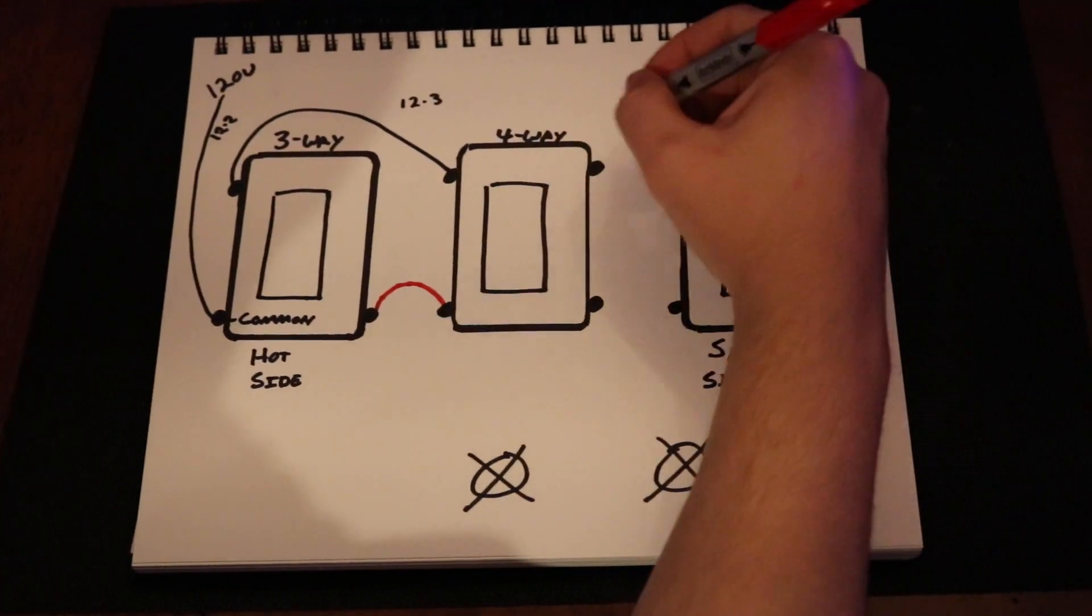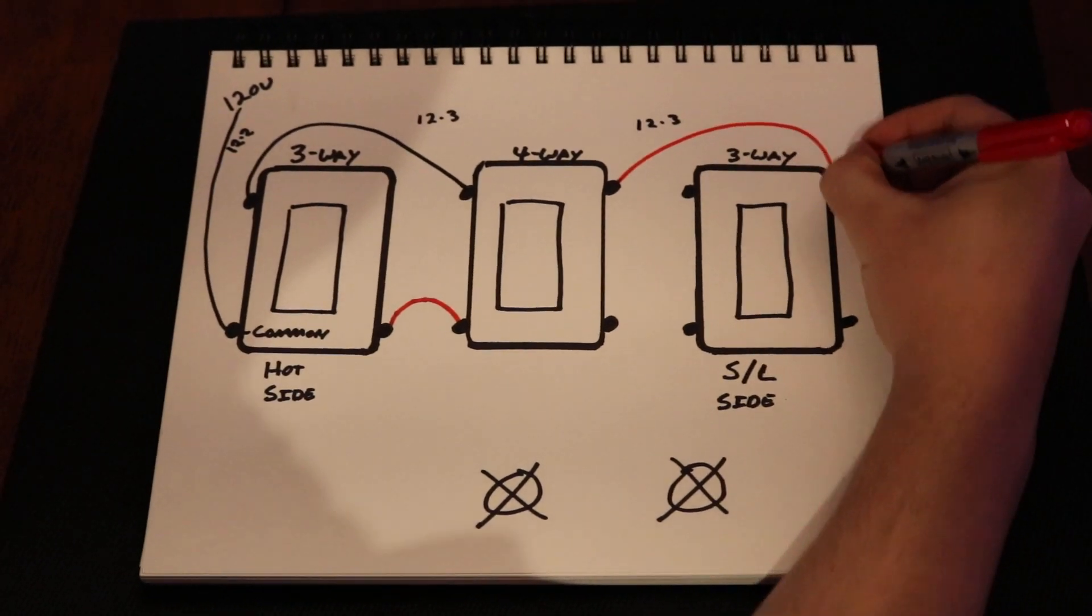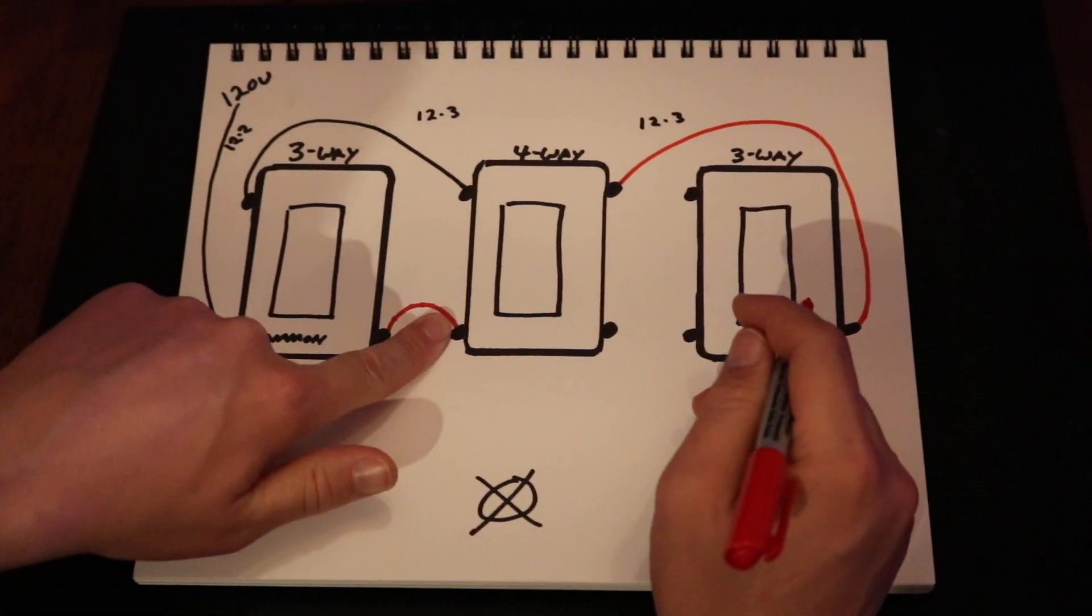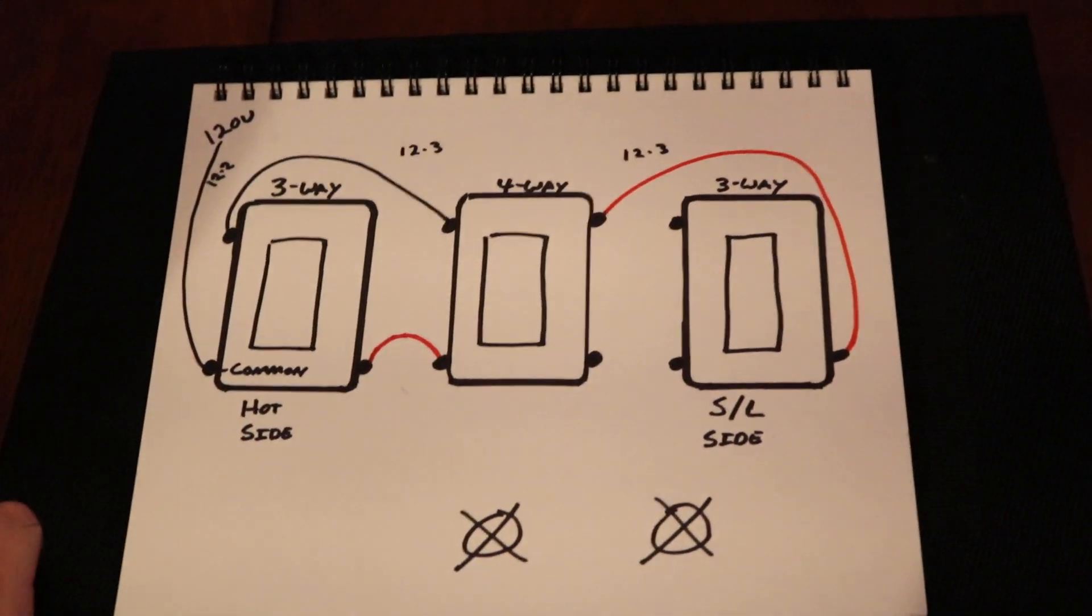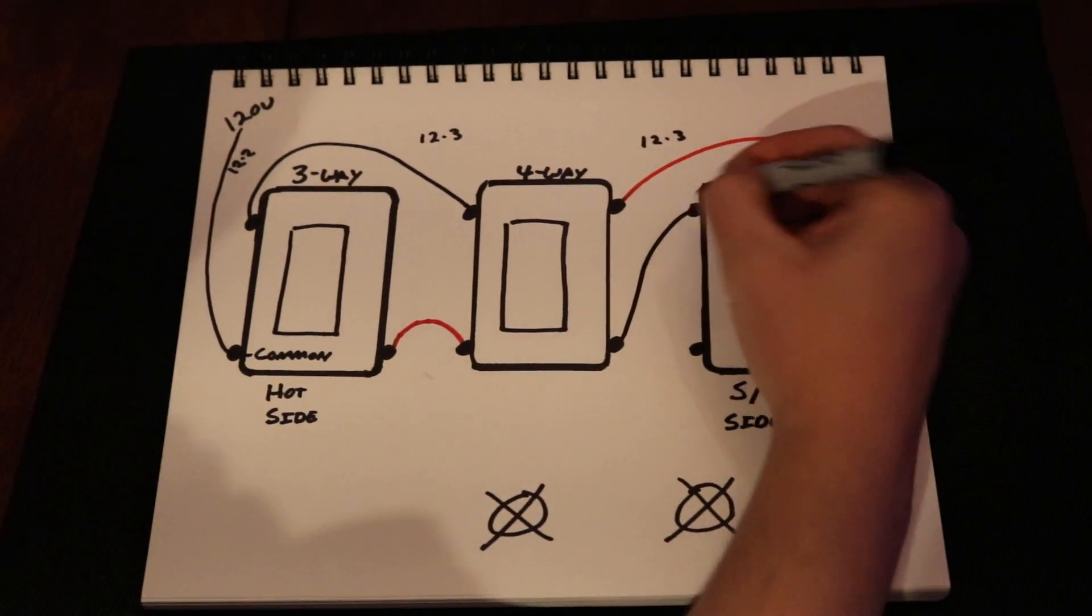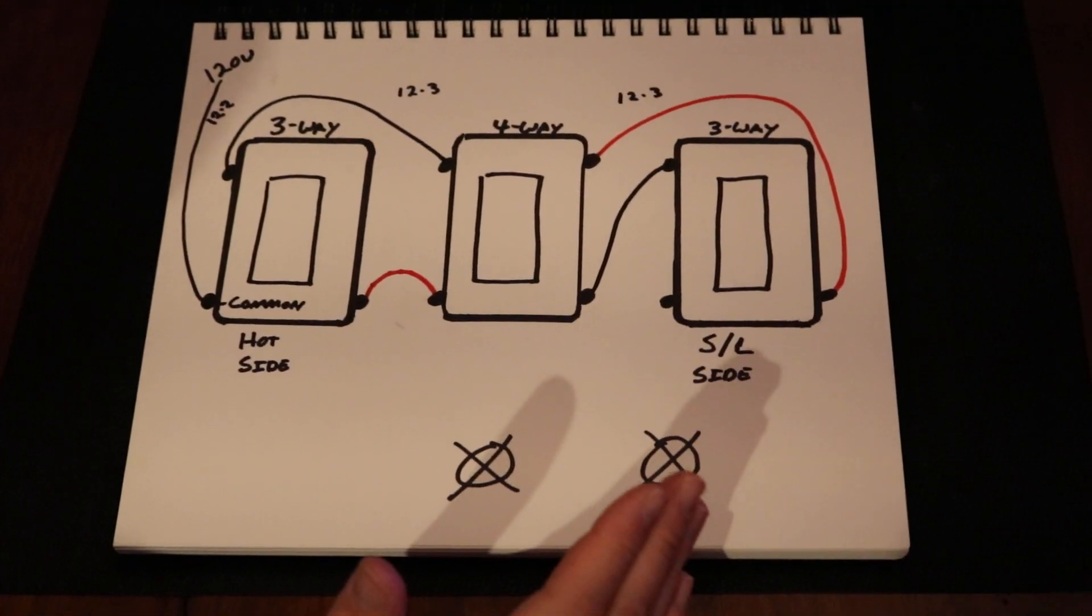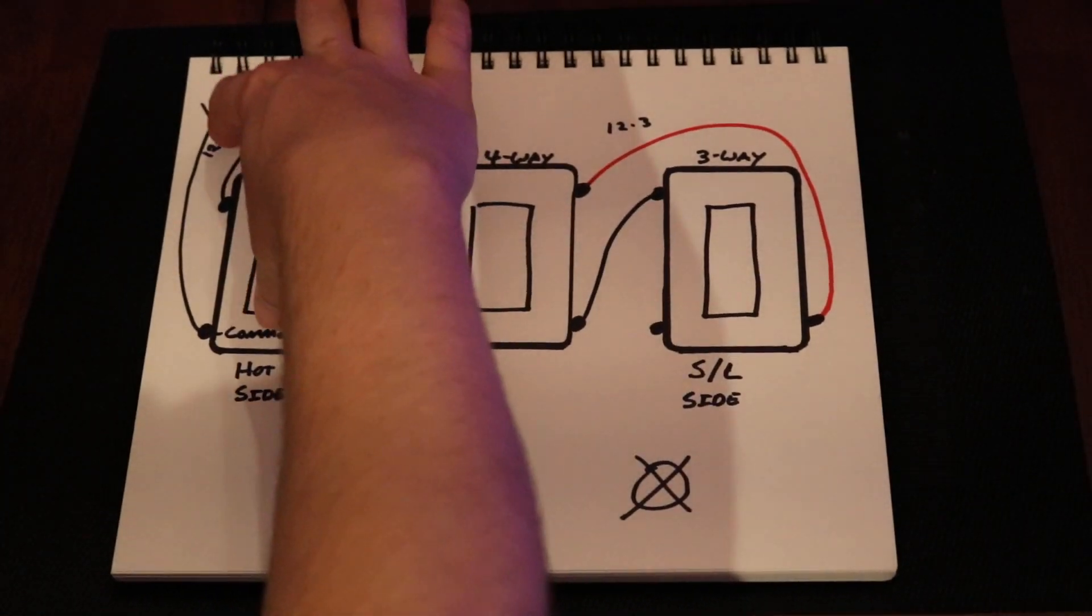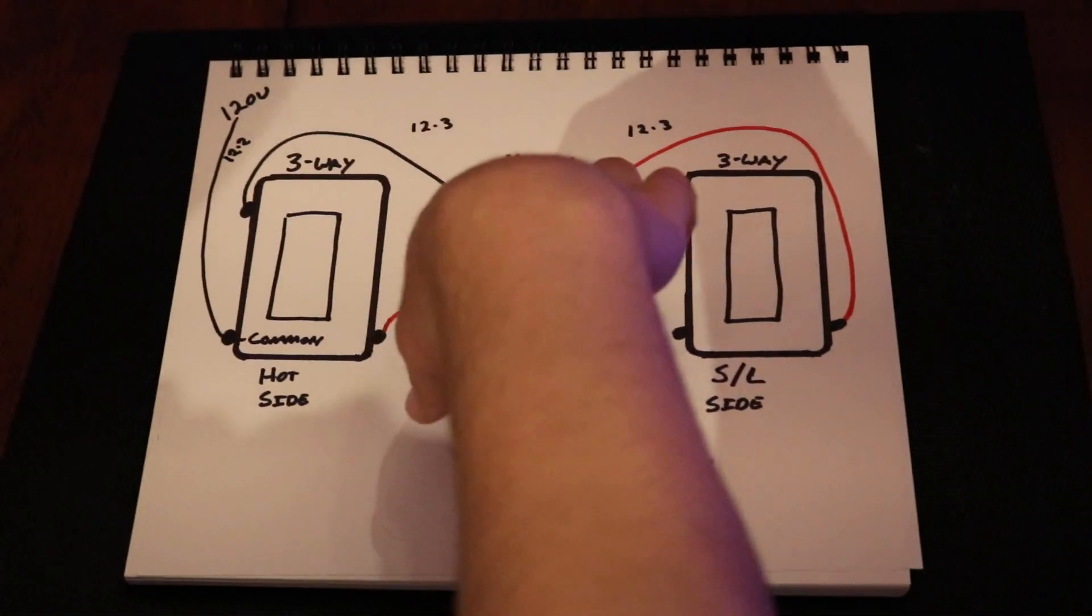You take your outgoing travelers and you put it on the right side, and you crisscross your colors to where you have your red on the bottom left-hand corner on your incoming, on your outgoing you put it on your right top-hand corner, and vice versa for the black. If you wire your four-way switch this way, it'll work every time. You won't have any problems.